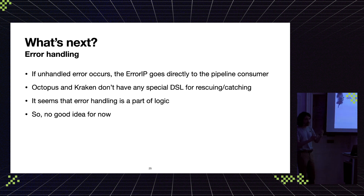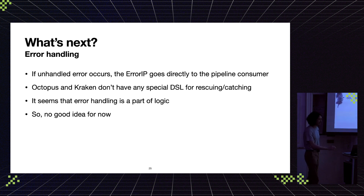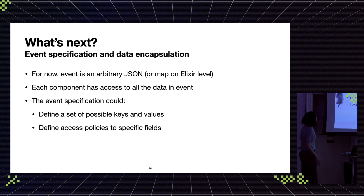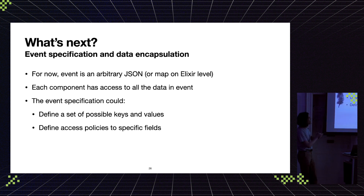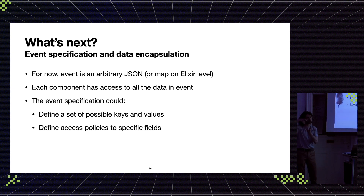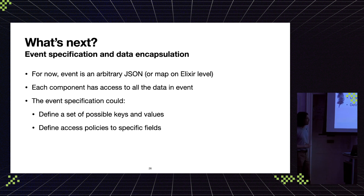I'm still thinking about error handling. When you handle errors in your application, it becomes part of your logic, so I'm not sure if both Alf and Kraken should provide a specific DSL for handling errors. There's also the very interesting problem of data encapsulation: currently in Alf and Kraken, each component has access to the whole event. Maybe it's not good to give such access to all components. I have some ideas about introducing encapsulation logic to the event itself — when you create an event, you also define rules about what components can access which fields.